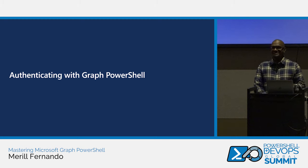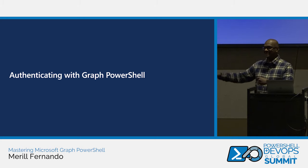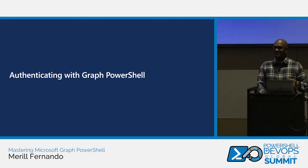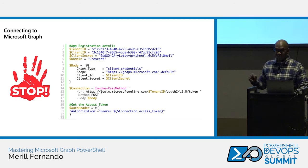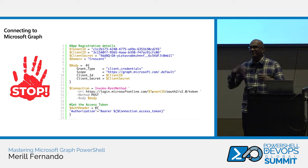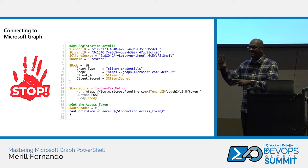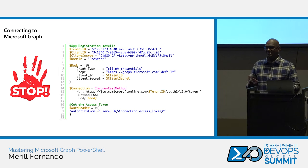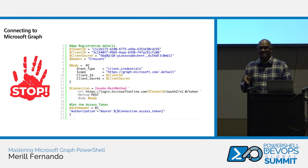I want to talk about authenticating with Graph PowerShell because it's something that stumps a lot of people. Even in 2024, I see code in blogs — even by MVPs — where they pass in a client ID and secret, call the auth token endpoint, get a token, inject it into the header and send it off. As someone from the Entra team, please don't do that. When you get this token, it might work fine at first, but if your script runs for more than an hour, you'll get an error because the access token is only valid for one hour, and then you need to call a different endpoint with a refresh token.